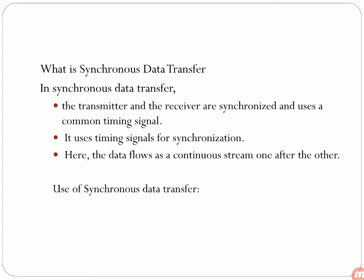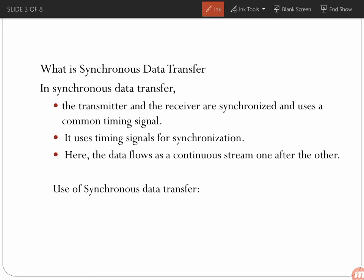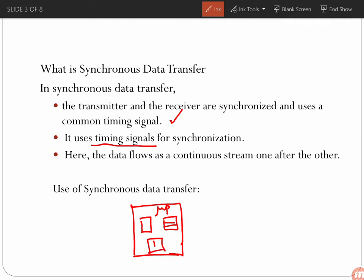In synchronous data transfer, the transmitter and receiver are synchronized and use a common timing signal. The transmitter uses timing signals to align with the receiver. In synchronous data transfer, the data flows as a continuous stream one after the other. This is usually used on-board — for example, in a microprocessor chip where we have the ALU, registers, and timers.